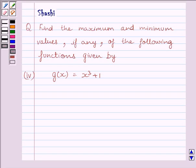Hi and welcome to the session. Let us discuss the following question. Question says, find the maximum and minimum values, if any, of the following functions given by g(x) = x³ + 1.